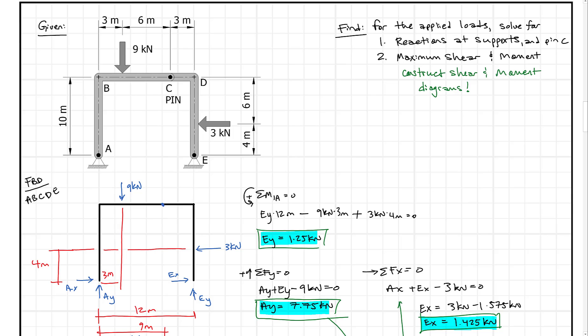In a previous video, we went through and found the reactions at this frame — the reactions at the pins and also the internal pin C. If you want to take a look at that, click on the link in the comments or description below. What we want to do here is find the maximum shear and maximum moment by constructing the shear and moment diagrams.